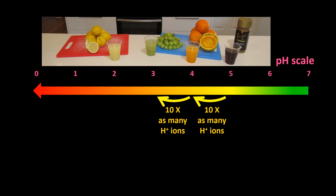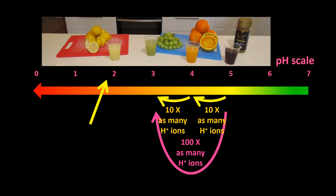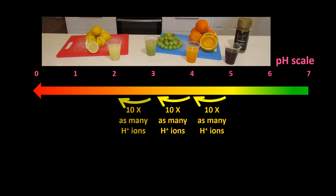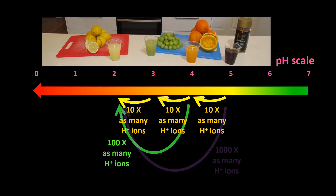So mathematically it makes sense that a cup of grape juice has 100 times as many H+ ions as a cup of coffee. Lemon juice with a pH of 2 has 10 times as many H+ ions as a cup of grape juice, 100 times as many as a cup of orange juice, and 1,000 times as many as a cup of coffee.